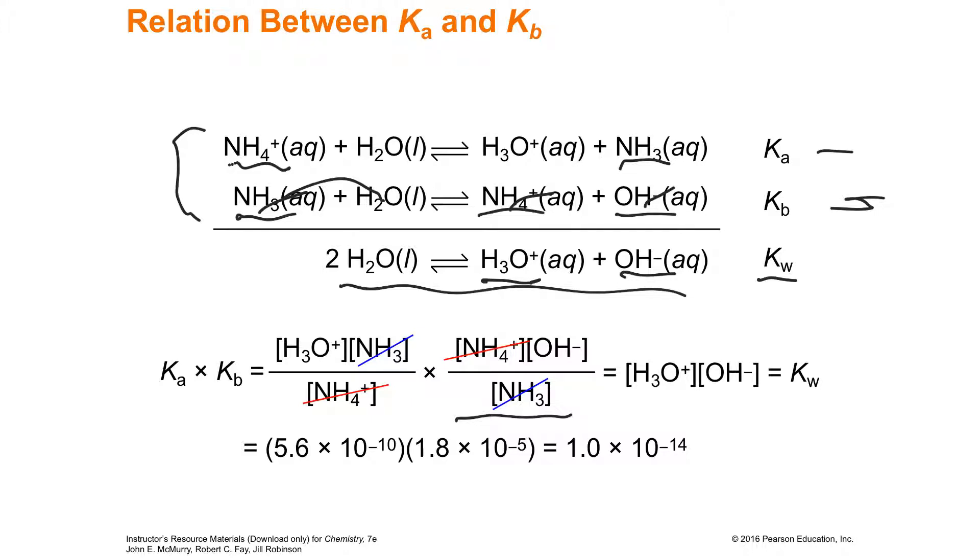So K sub W is what's left when you add K sub A and K sub B together. K sub A and K sub B are the components of K sub W. Well, you know K sub W because you memorized it. It's 1 times 10 to the negative 14.